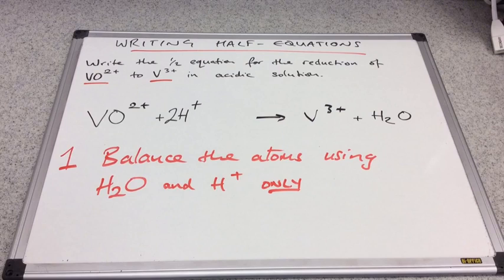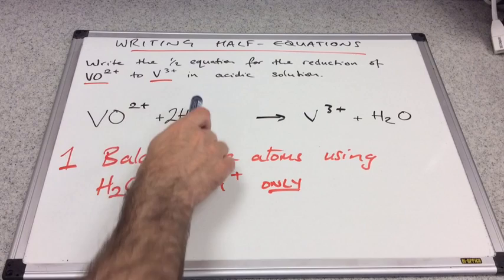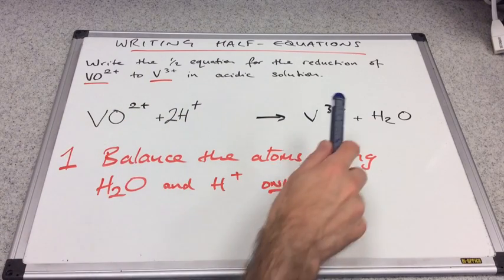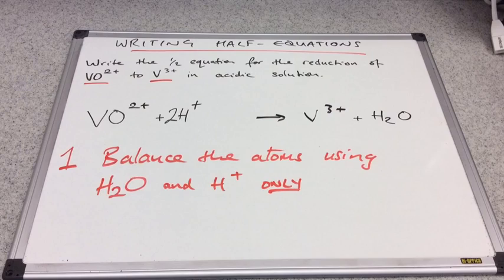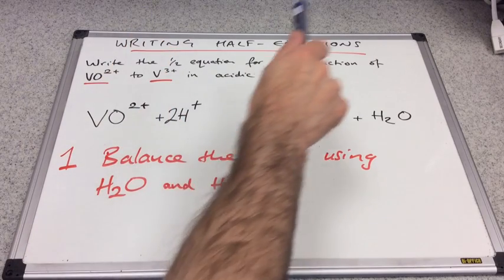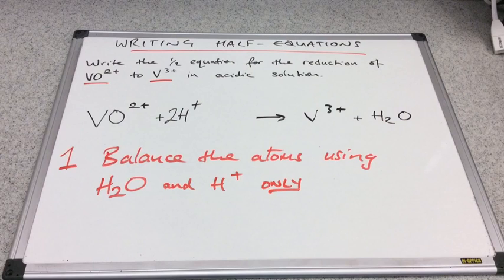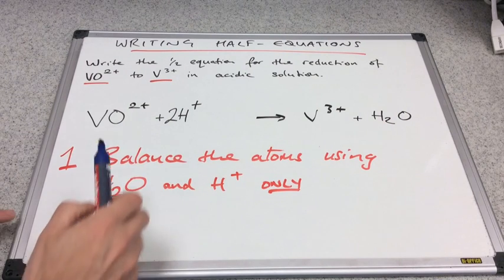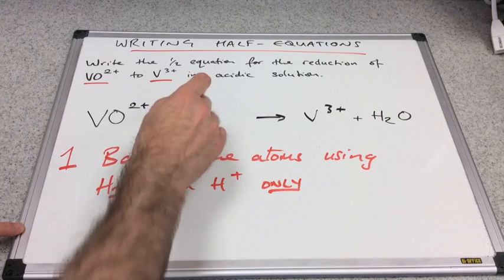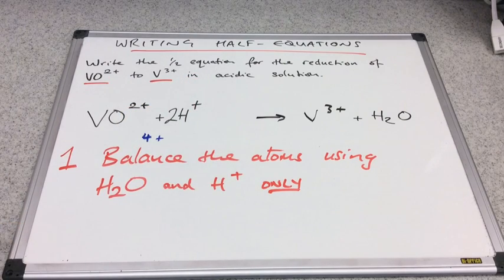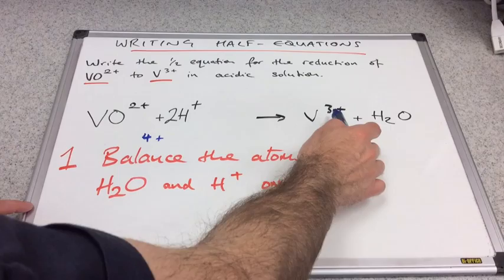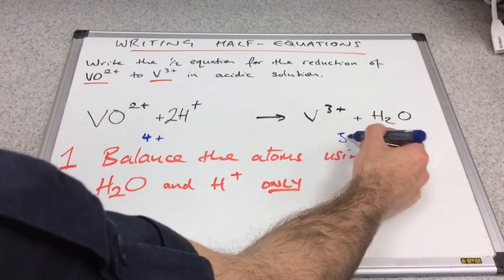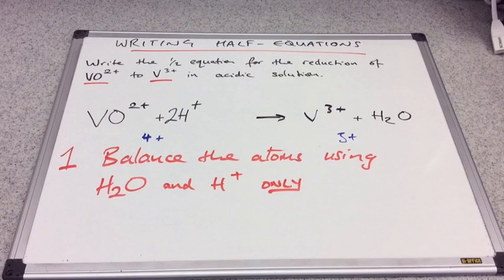Once you've balanced the atoms, the next thing we have to do is balance for charge. So we'll look at the charges on the left-hand side and compare them with the charges on the right-hand side. And what we have to do is make sure that the charges are identical on either side of the arrow. So what's the charge on the left at the moment? It is 2 plus plus 2 plus, so it's 4 plus. What's the charge on the right? 3 plus plus no charge, so it's obviously 3 plus. So those charges don't balance.